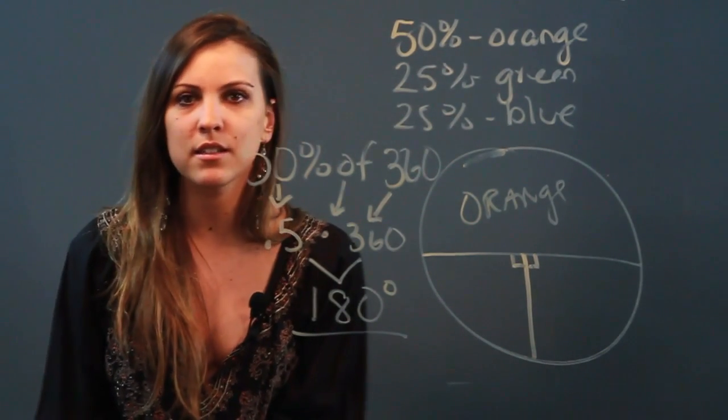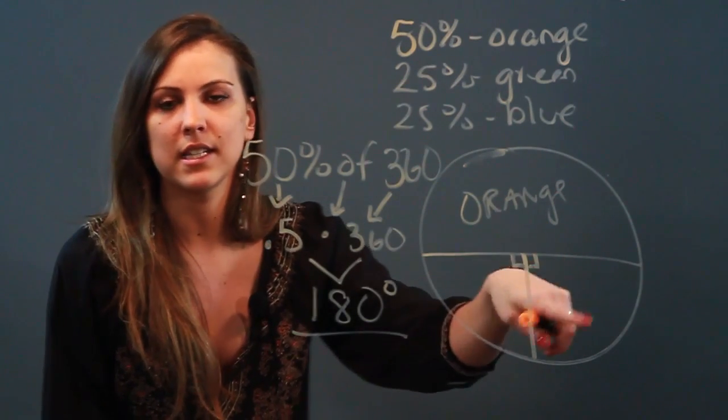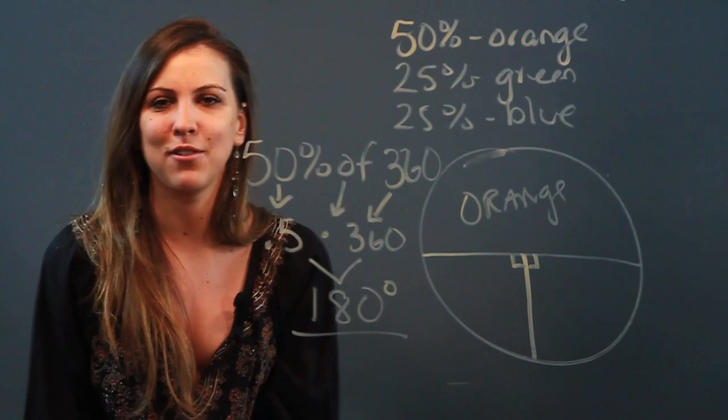So to use percents to find angle degree measurements, just take the percent of 360, because 360 is the total degrees in a circle. That's how you use percents to find angle degree measurements.